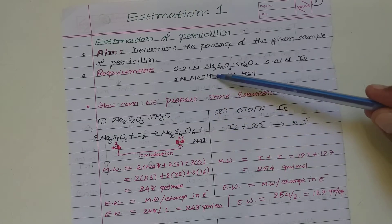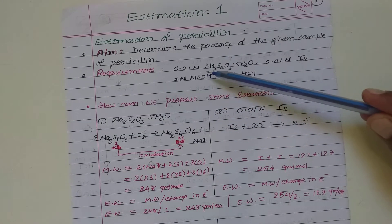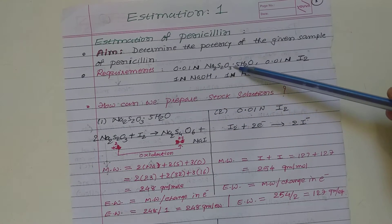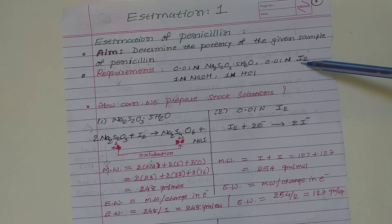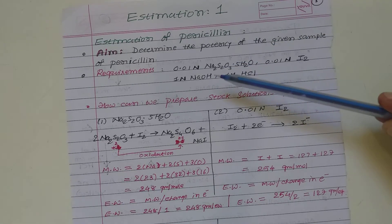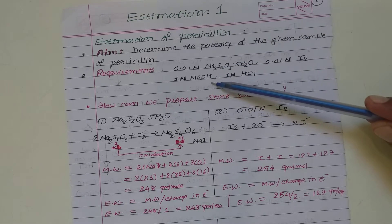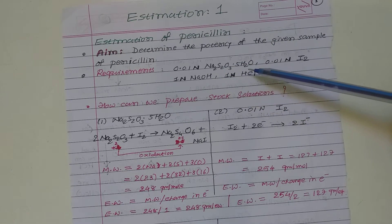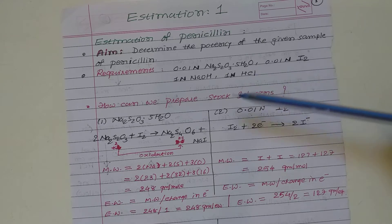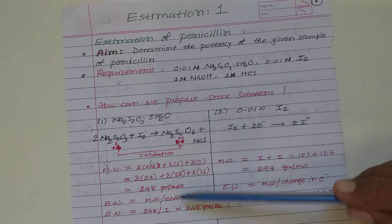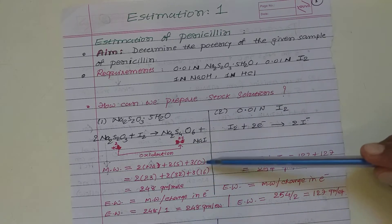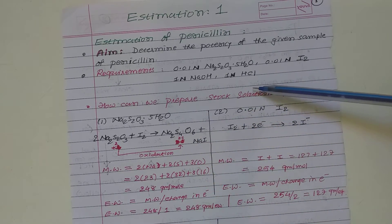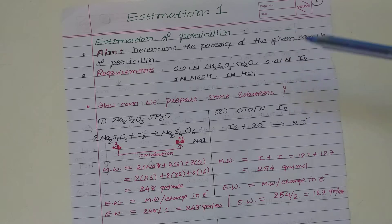These are the requirements for the practical: 0.01 normal sodium thiosulfate solution, 0.01 normal iodine solution, 1 normal NaOH solution, and 1 normal HCl solution. This is the method to prepare stock solution during the practical.